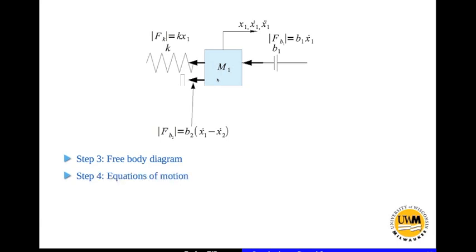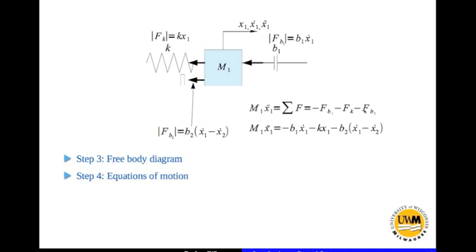Now we write the equations of motion. M1 x1 double dot is positive because M1 is moving in the positive x direction, and it equals the sum of all forces in the x direction. The forces are Fb1 in the negative x direction, Fk in the negative x direction, and Fb2 in the negative x direction. Substituting the magnitudes: Fb1 is B1 times x1 dot, Fk is k times x1, and Fb2 is B2 times (x1 dot minus x2 dot). Bringing everything to one side: M1 x1 double dot + (B1 + B2) x1 dot + k x1 − B2 x2 dot = 0. Notice that the coefficients of x1 double dot, x1 dot, and x1 are all positive.